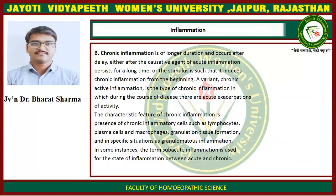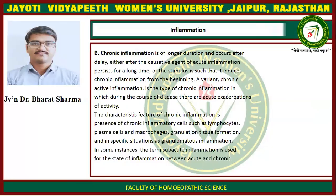Second is chronic inflammation. Chronic inflammation is of longer duration and occurs either after the causative agents of acute inflammation persist for a longer time, or the stimulus is such that it induces chronic inflammation from the beginning. A variant, chronic active inflammation, is the type of chronic inflammation in which during the course of disease there are acute exacerbations of activity.